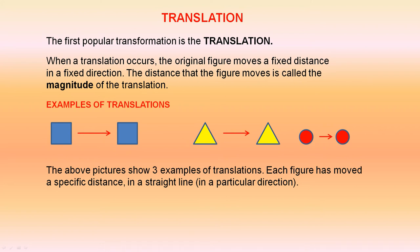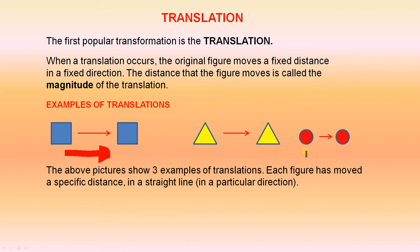The above pictures show three examples of translations. Each figure has moved a specific distance in a straight line, that is, in a particular direction. It's very important to note that each of these figures has moved in a straight line — not in a curve — in a straight line, and they have moved a fixed distance.